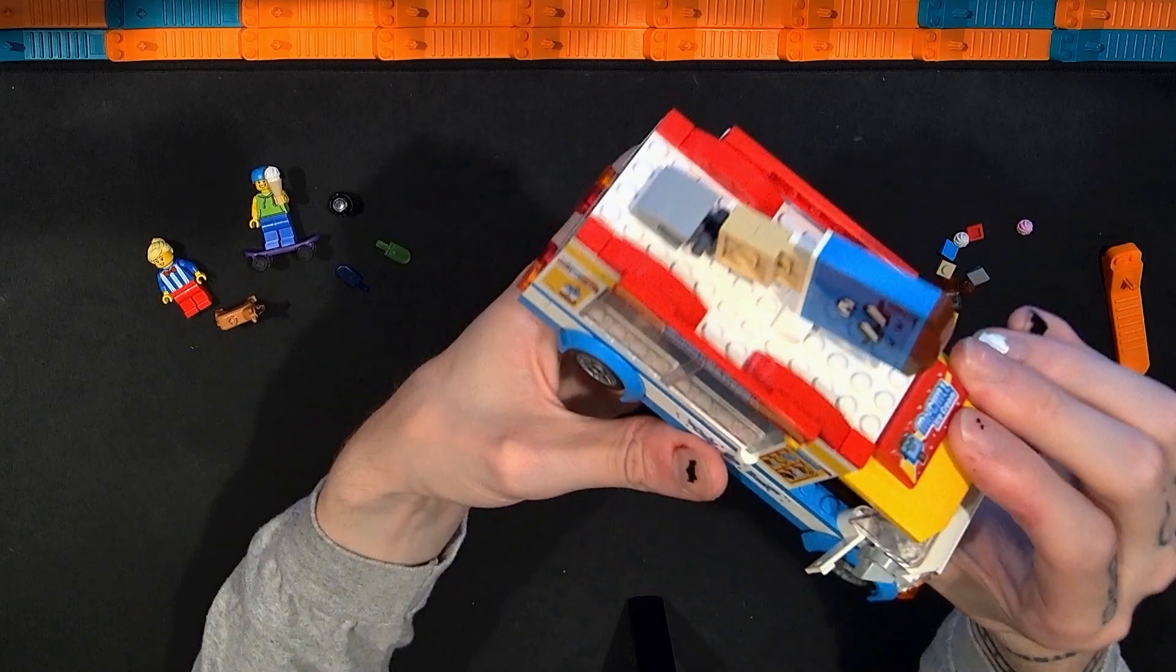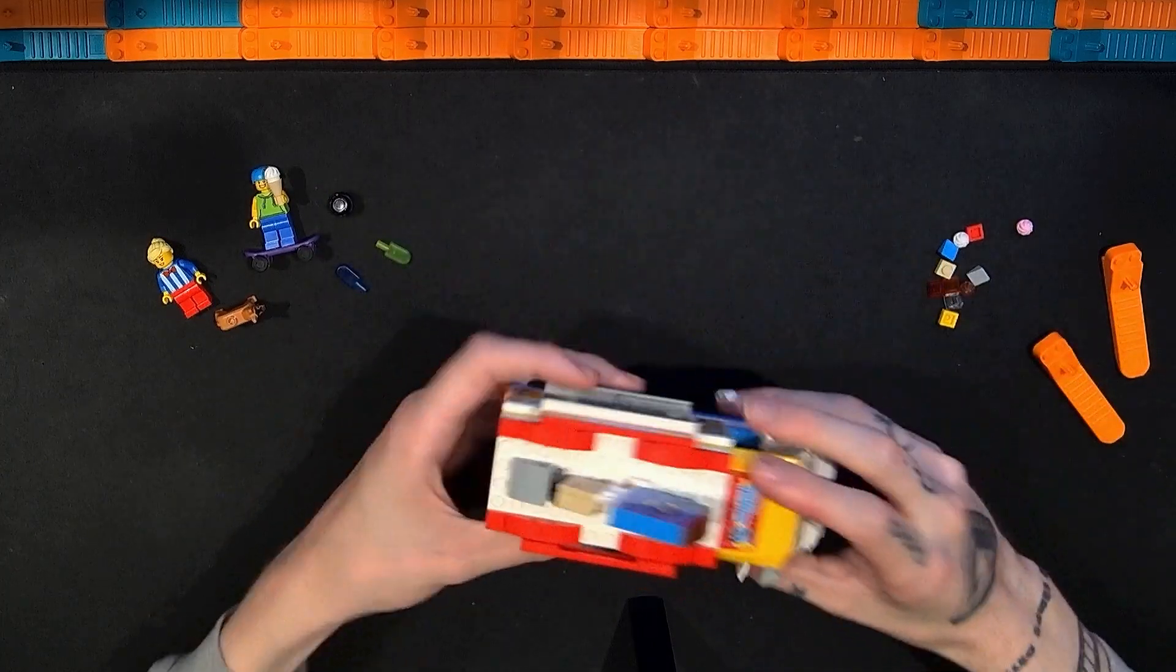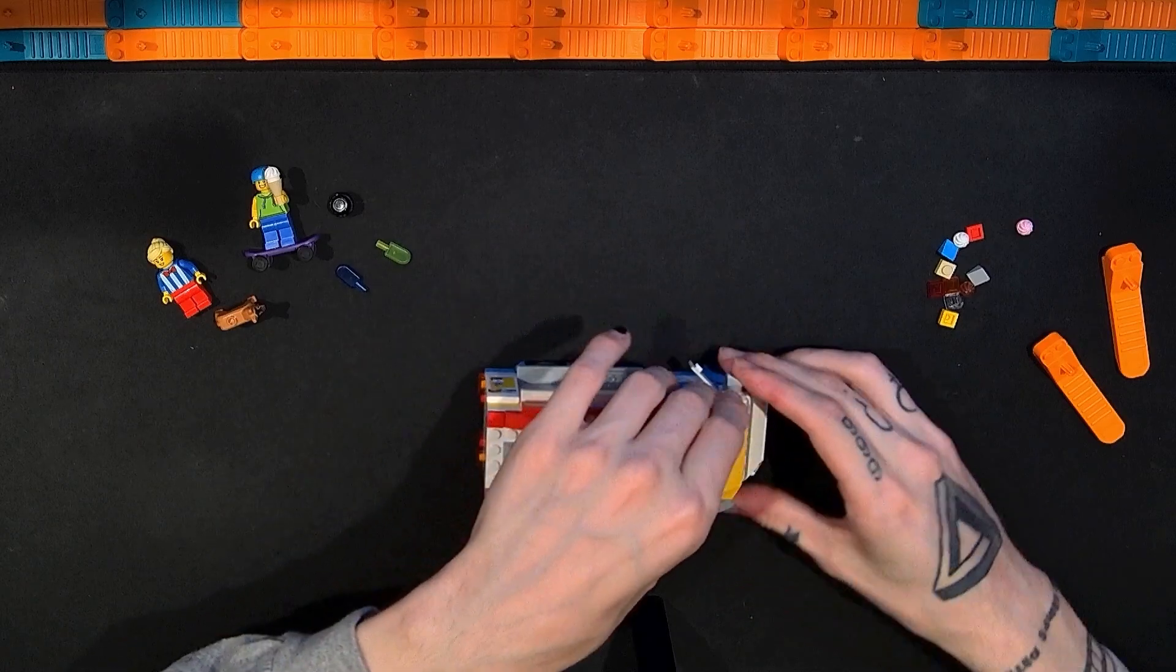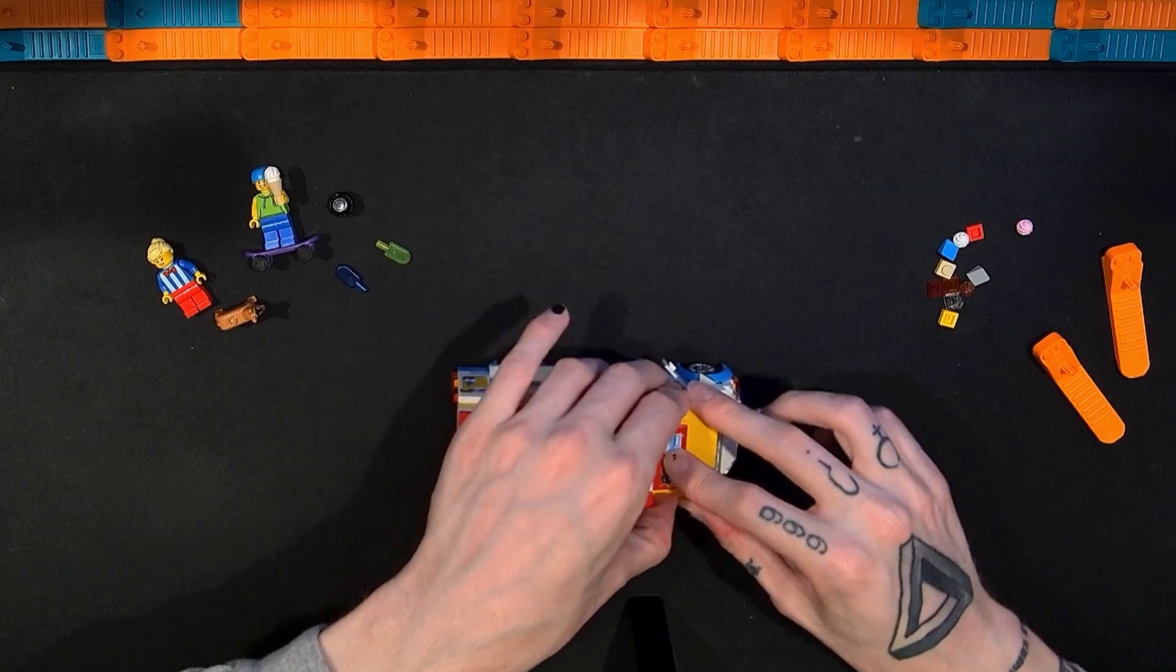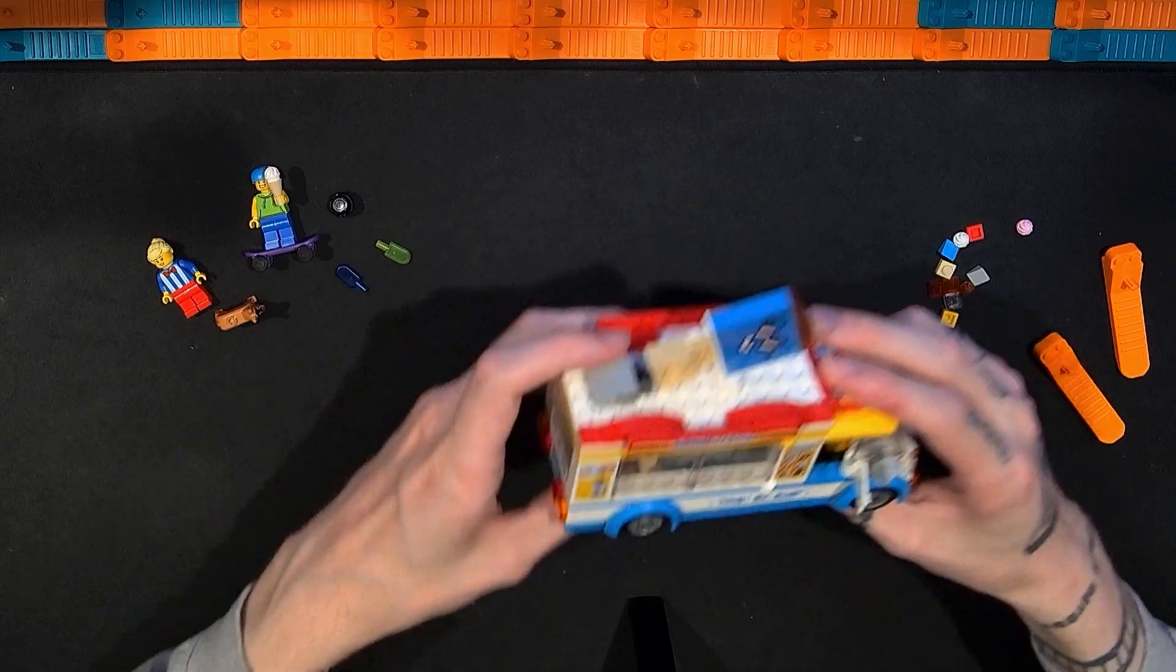And we can see on the dash we do have a printed one by two cheese wedge type piece or slope piece there. So it's nice to get that printed. And that comes back on relatively easy if I can put it on.